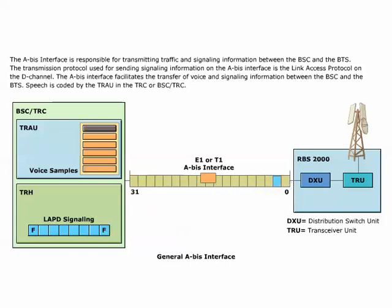E1 and T1 link connections are supported. E1 is a 32-channel time slot PCM line defined in the ITU-T specifications. T1 is a 24-channel PCM line defined in ANSI specifications. The transmission protocol used for sending signaling information on the ABIS interface is the link access protocol on the D channel.